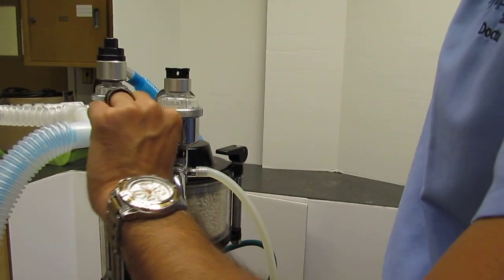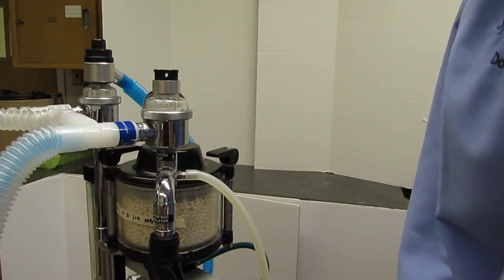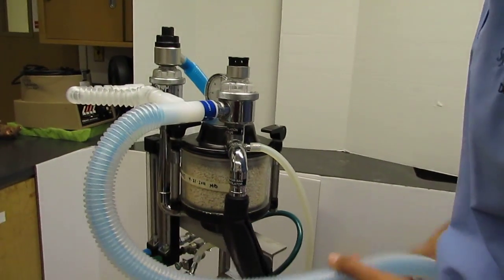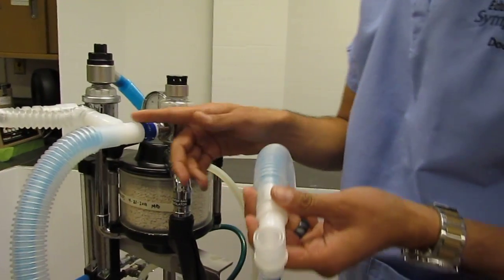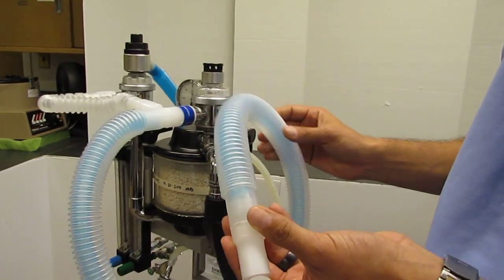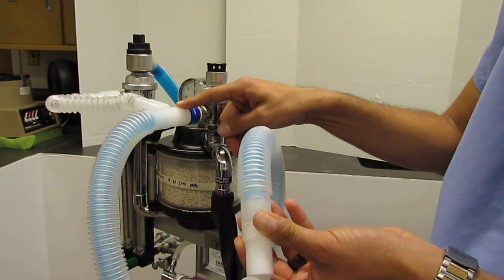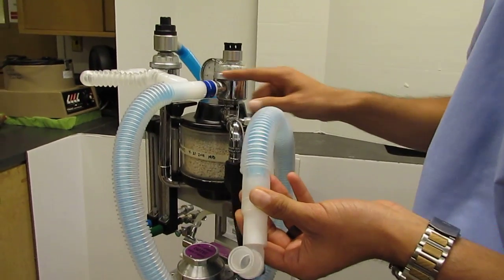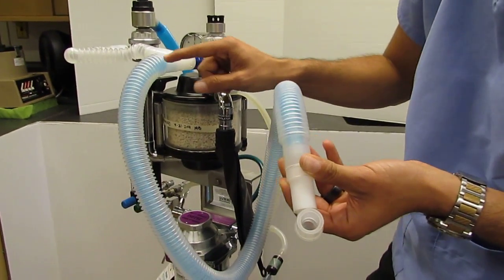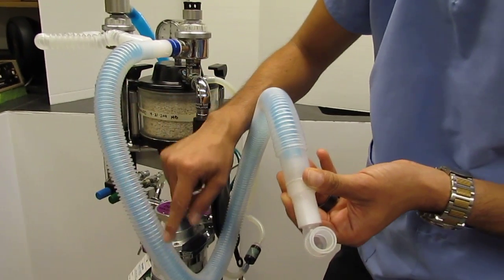From here, the one-way inspiratory valve sends the anesthetic gas and oxygen mixture in to the patient, via this coaxial vein circuit, this is a rebreathing circuit, and we'll talk about circuits in a separate video, but this is a rebreathing circuit, the inspiratory air is going through the middle tube.